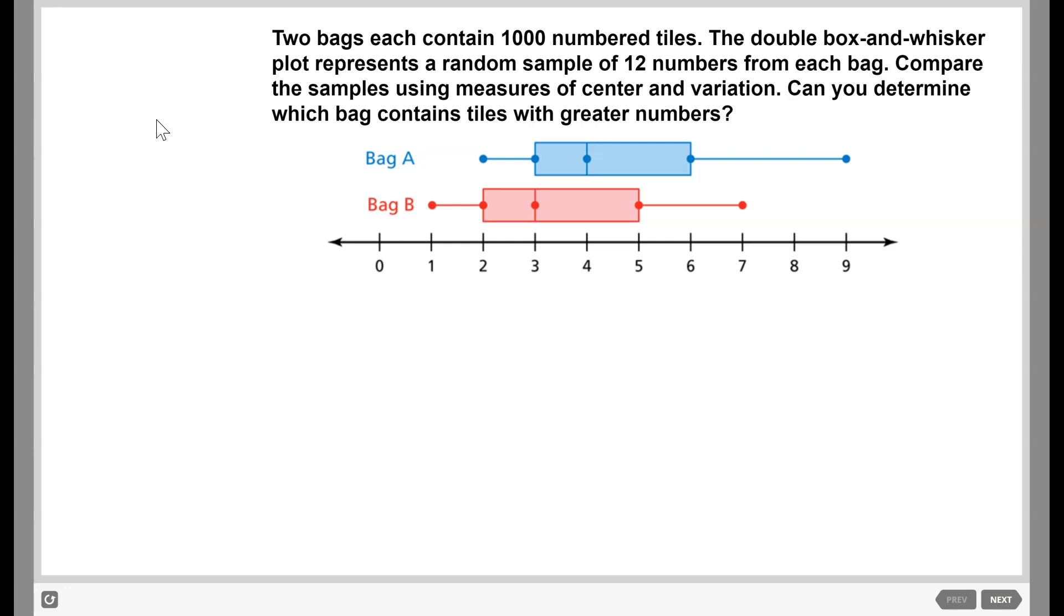Looking at this, if we want to compare these using measures of center and variation, the first thing we want to look at is the distribution of our data. Generally speaking, if our data is skewed right or skewed left, we don't want to use a mean. The reason for this is that skewed data means it has outliers, and those outliers can strongly affect the mean. Whereas we can use a median, and that's just going to find our middle value. So it doesn't matter if there's an extreme outlier on either end.